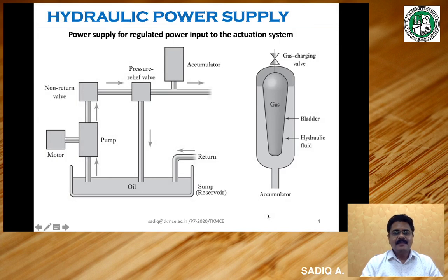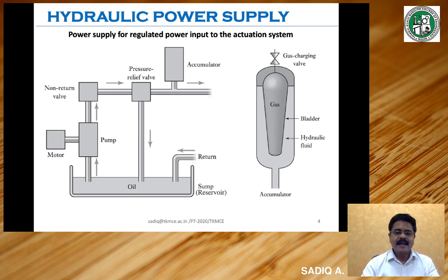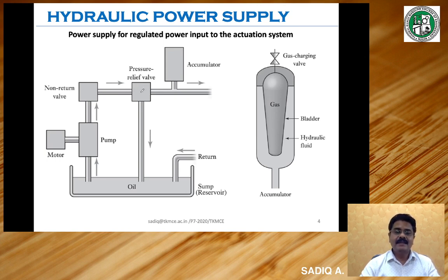Now let us see another concept in hydraulic and pneumatic systems — that is called the power supply. Power supply is meant for giving regulated power to any device. Hydraulic power supply is also meant for providing regulated hydraulic power to the actuation system. Let us see the elements in the diagram. There is a reservoir or oil sump containing hydraulic fluid, a pump driven by a motor, a non-return valve that prevents the fluid from flowing backward, and a pressure relief valve that protects the entire circuit by taking care of the circuit pressure. There is also an accumulator.